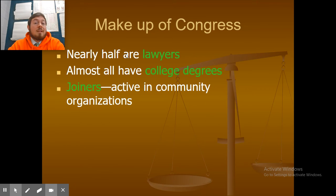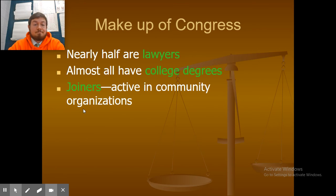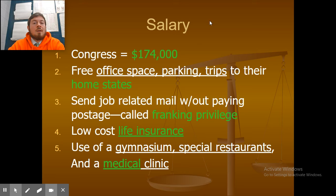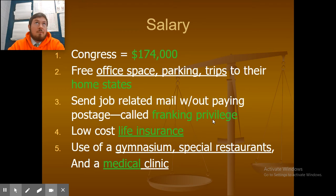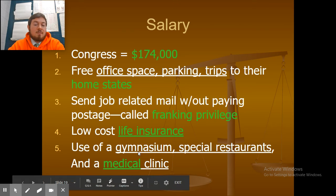Makeup of Congress: nearly half of the people in Congress are lawyers, almost all have college degrees, and many are active in community organizations. Salary: congressmen and women make $174,000 a year. They get free office space, free parking, free trips to their home states, and they send job-related mail without paying postage — called a franking privilege. They also have low-cost life insurance and use of a gymnasium, special restaurants, and a medical clinic.